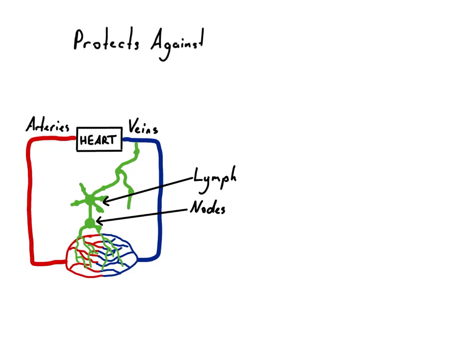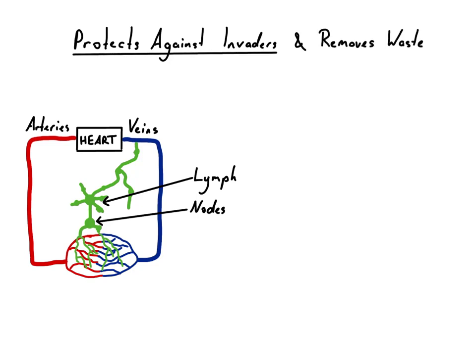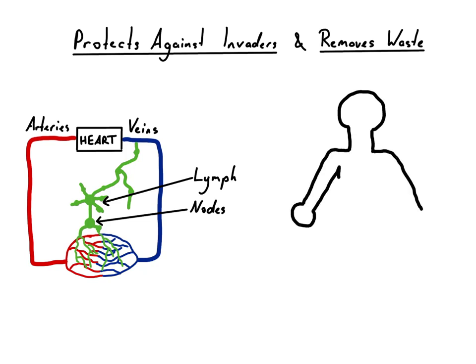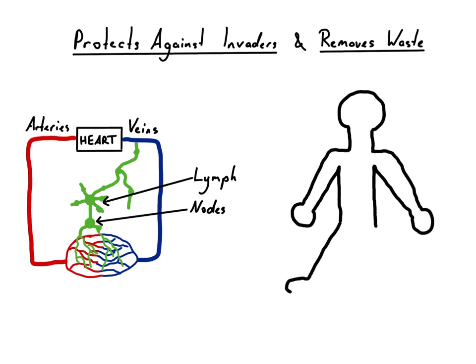But let's rewind a bit, because on the journey back to the circulatory system, lymph undergoes a few other important processes. The lymph collected at the capillary beds contains waste products, cell debris and possibly pathogens.